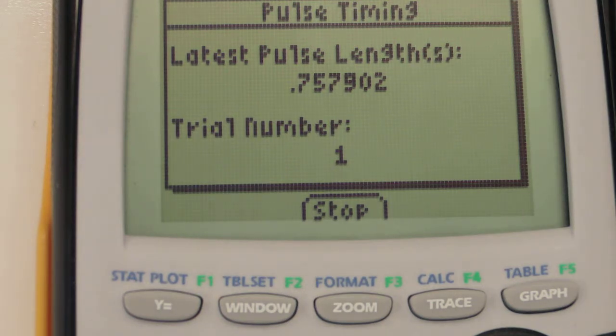So write this time down. Don't rely on the calculator. Just go ahead and write the time down. And that's the time it takes for the cart to go between the gate on the right and the gate on the left.